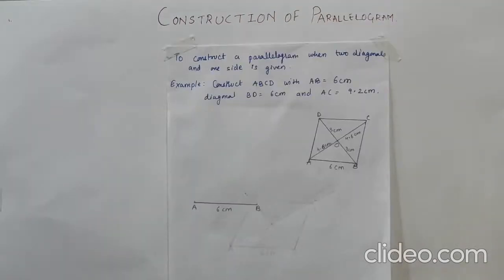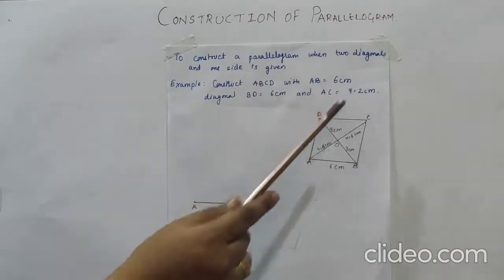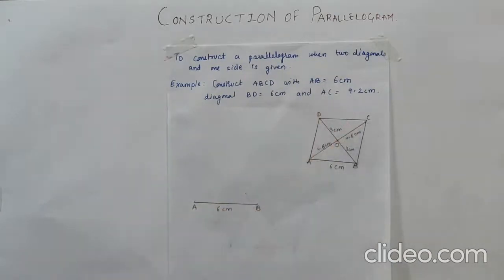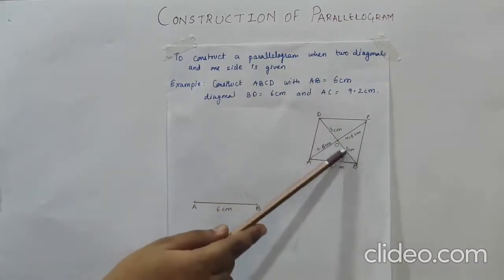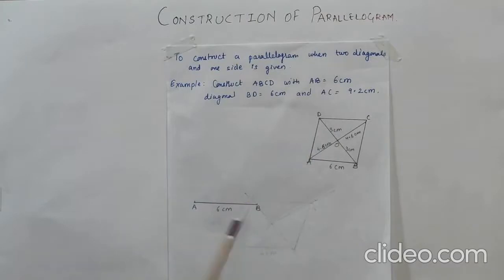Now the last type of construction for the parallelogram is when the two diagonals and one side is given. So here we have ABCD parallelogram where AB is the side that is 6 cm and the diagonals are 6 cm and 9.2 cm. Since we know that the diagonals of the parallelogram bisect each other, we have AO is equal to 4.6, the half of 9.2 and this as 4.6 and over here the half of 6, that is 3 cm and 3 cm.